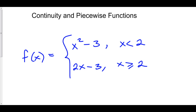Let's consider some piecewise function f of x equal to x squared minus 3 when x is less than 2, and 2x minus 3 when x is greater than or equal to 2. Now, x squared minus 3 is a polynomial — that's continuous everywhere. 2x minus 3 is also continuous everywhere. So the only point we need to check is what I call the Frankenstein point, because you can think of a piecewise function as Frankenstein: we're taking a bunch of functions and sewing them together. The point where we sew them is x equals 2 in this case.